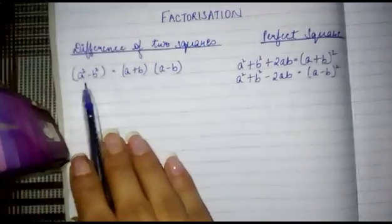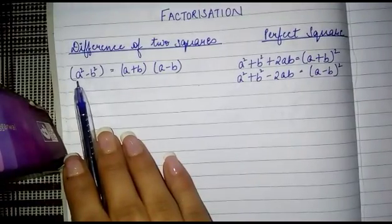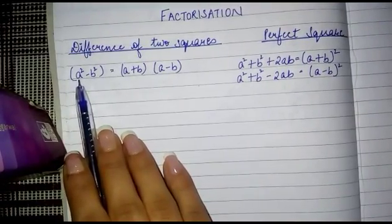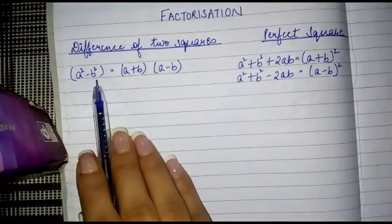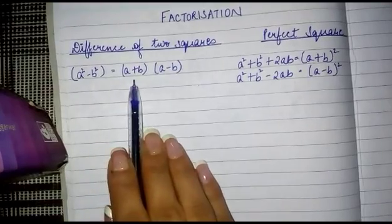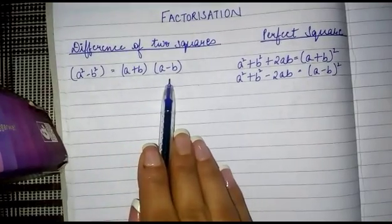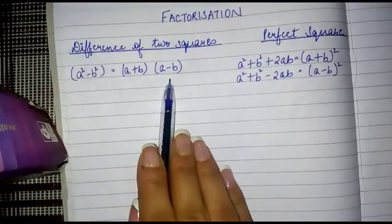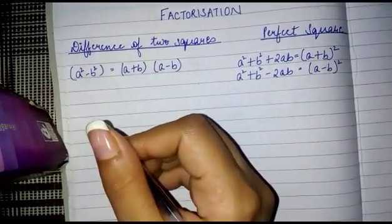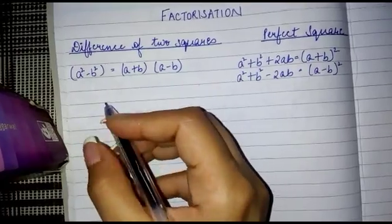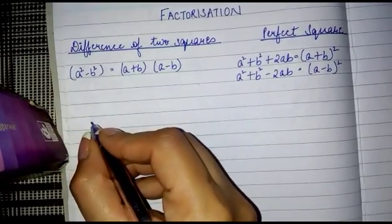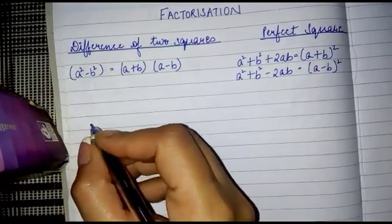Difference of two squares means the expression would be in the form of a² minus b², which is equal to (a + b) into (a - b). Let's see the same with an example.